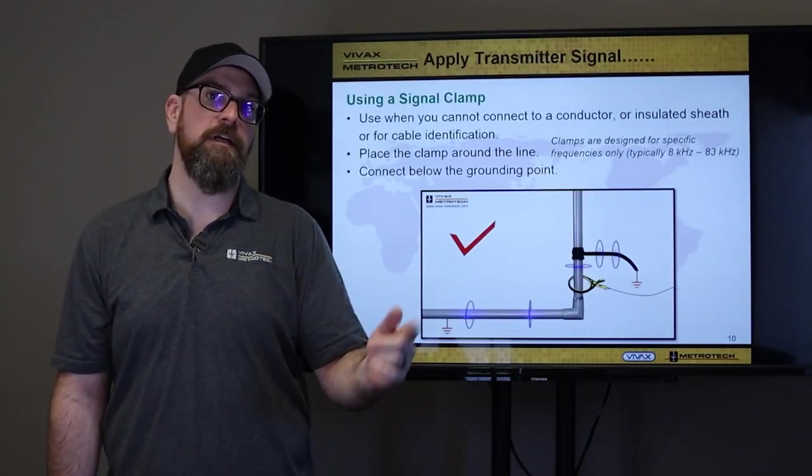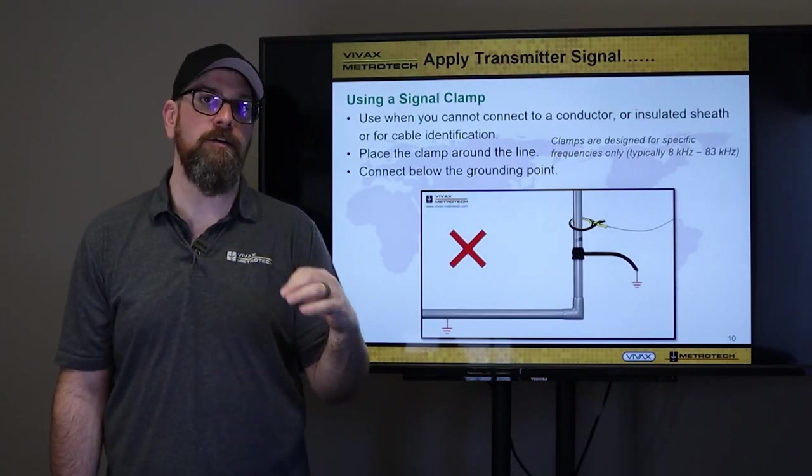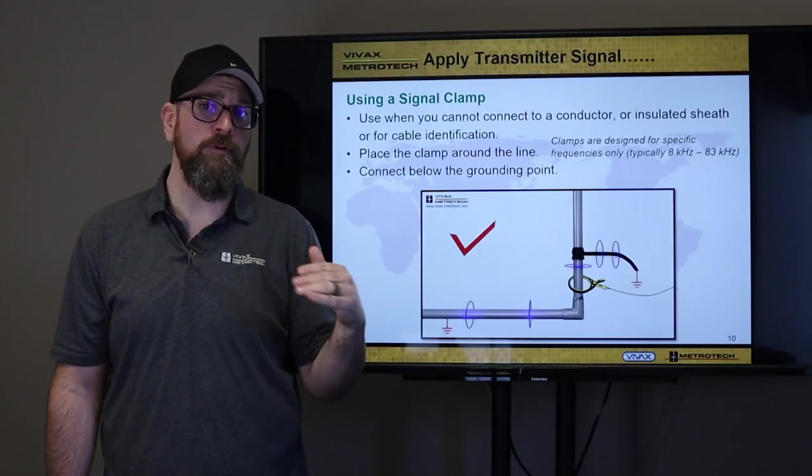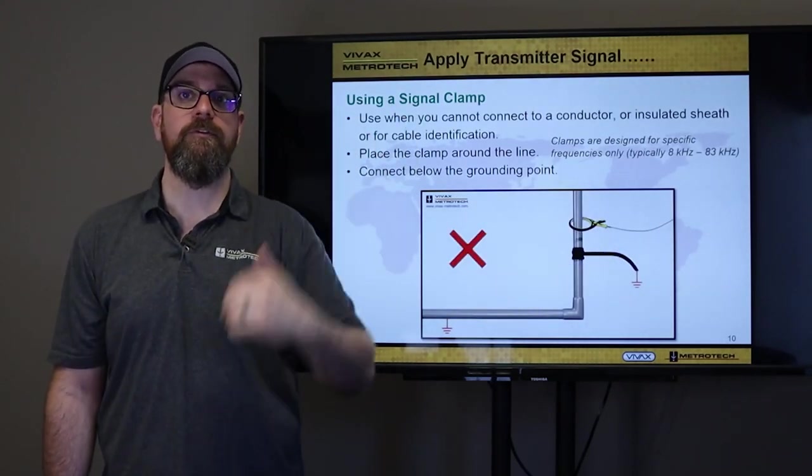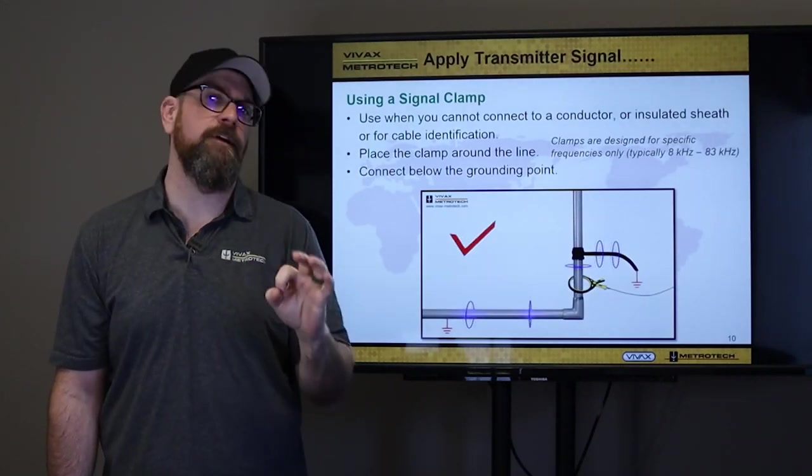Now, signal clamps. Very important note about signal clamps. You must have a ground ahead and behind the clamp, on both sides, as this illustration shows. If I go above the ground, I'm not gonna get any signal travel or very, very little.